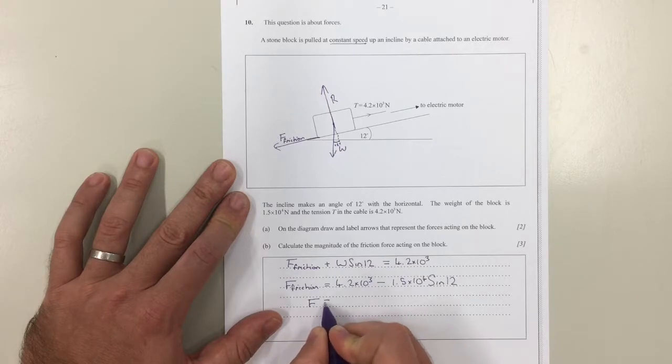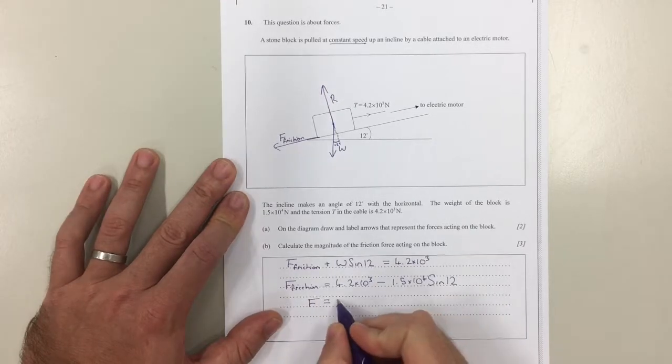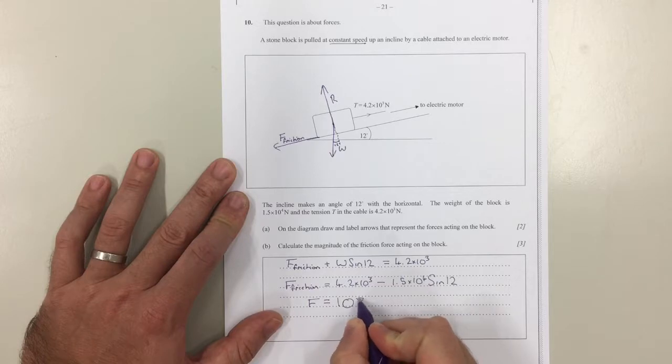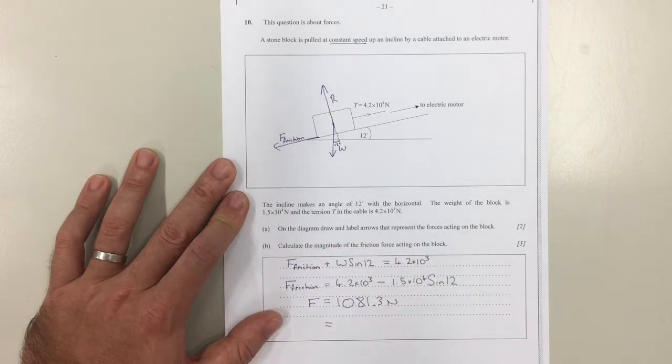And that gives us a frictional force, to two significant figures, of 1.1 times 10 to the 3 newtons.